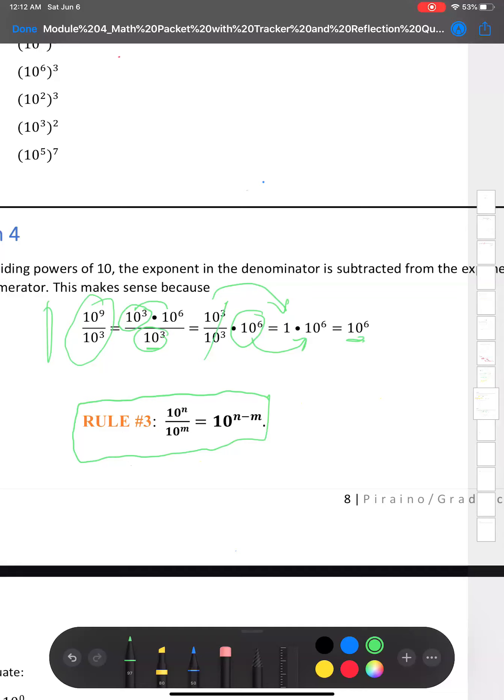Now you can go through showing your work this way, or you can also actually show work just by using this rule here. So in other words, 10 to the ninth power divided by 10 to the third power is equal to 10 to the ninth minus third, which is equal to 10 to the sixth because nine minus three is six.